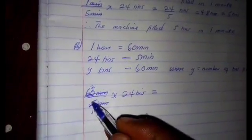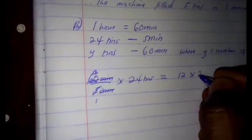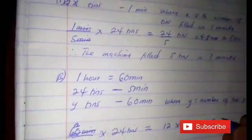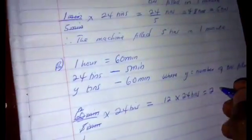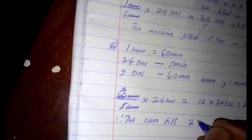This will cancel. 5 goes into 60 twelve times, making 12 times 24 tins. 12 times 24: 4 times 2 is 8, 4 times 1 is 4, 2 times 2 is 4, 2 times 1 is 2. Add them: 4 plus 3 is 8, 4 plus 4 is 8, making 288 tins. Therefore the machine can fill 288 tins in one hour.